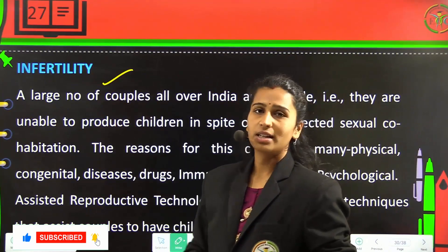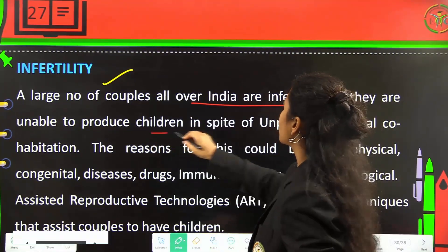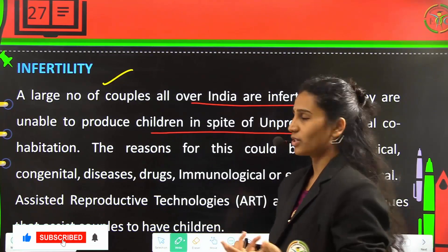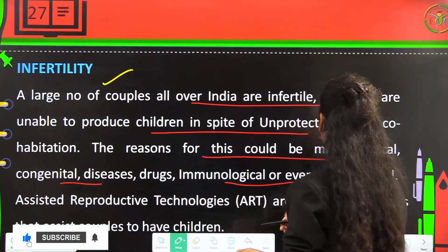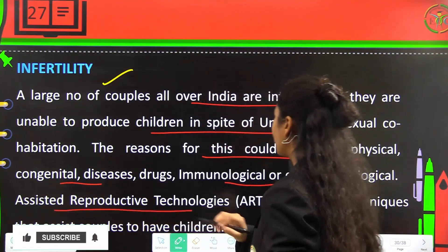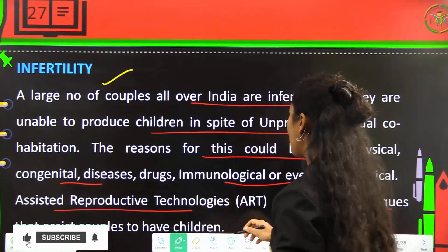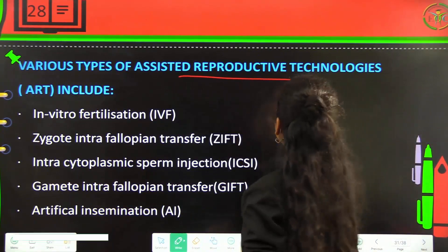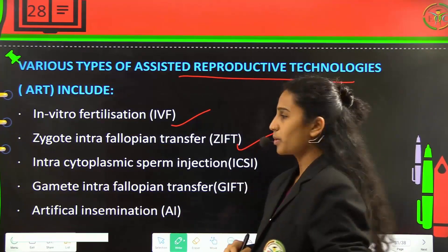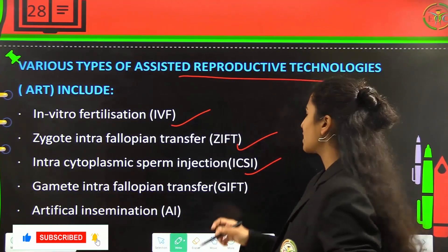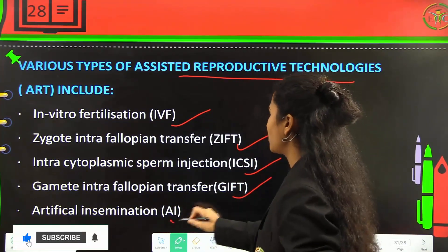Regarding infertility: a large number of couples in India are infertile, meaning they are unable to produce children despite unprotected sexual cohabitation. Reasons may include physical, congenital, immunological, or psychological aspects. Assisted Reproductive Technologies (ART) are special techniques to help couples have children. These include IVF (in vitro fertilization), ZIFT (zygote intra-fallopian tube transfer), ICSI (intracytoplasmic sperm injection), GIFT (gamete intra-fallopian tube transfer), and AI (artificial insemination).